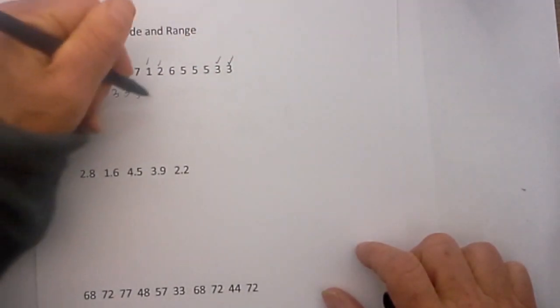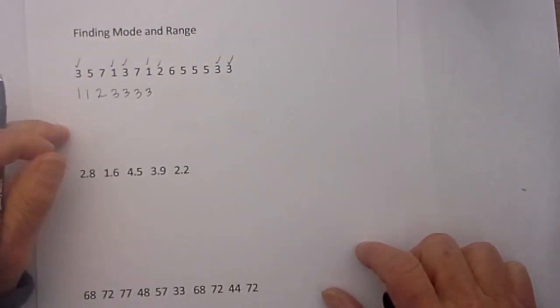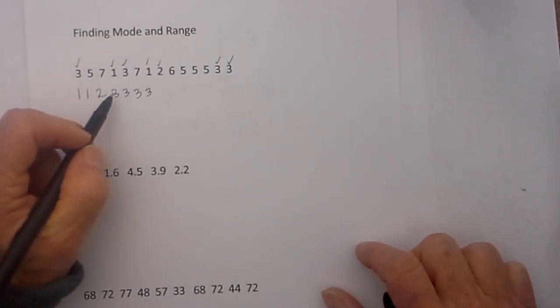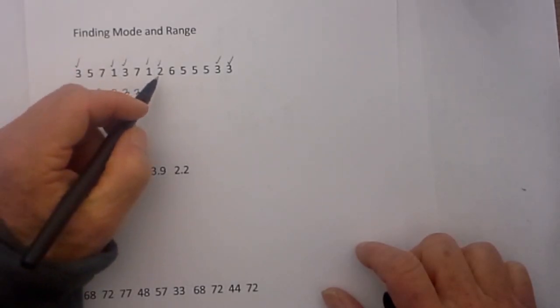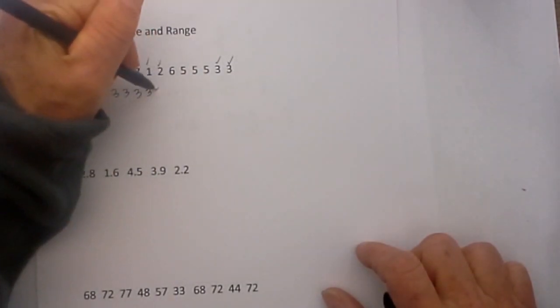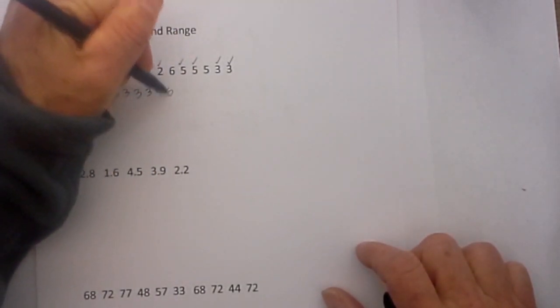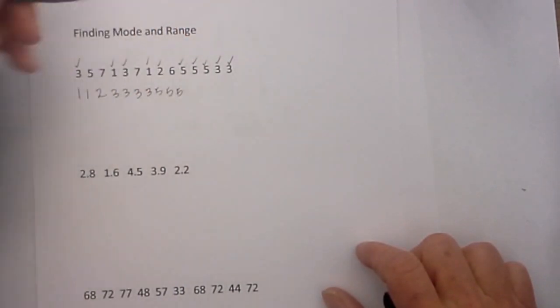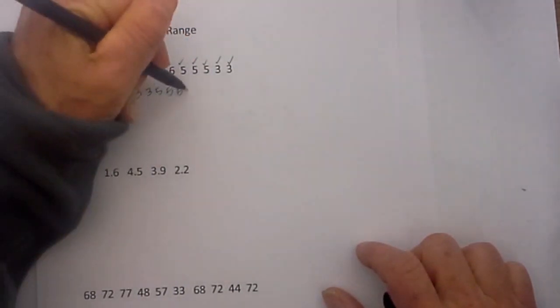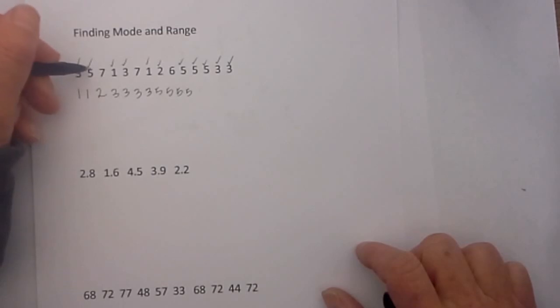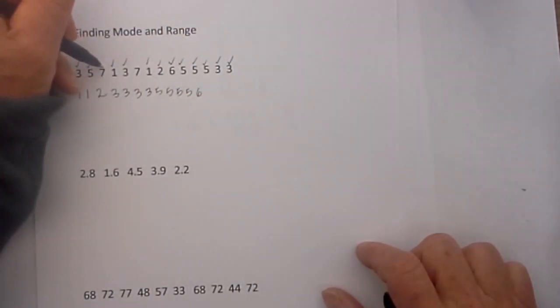Now it is a little more trouble doing a check mark but it will help you become much more accurate. Next after the 3 it looks like I have a 5 and another 5 and another 5, and then a 6 and a 7.